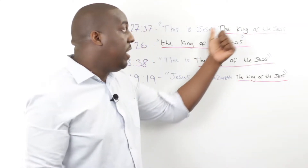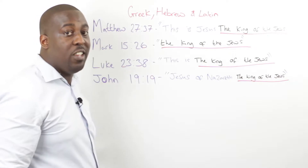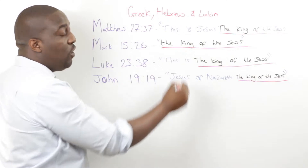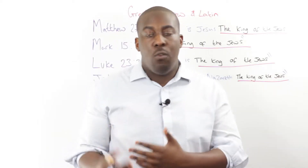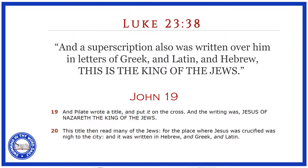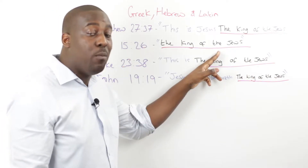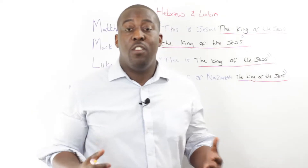We know that Pilate himself wrote these signs on the cross because it says so in one of the gospel accounts. And it says something really key in two of the gospel accounts: these things were written in Hebrew, Greek, and Latin. For any of you who are bilingual or multilingual, you can already see where I'm going. You can take one sentence in English and translate it into another language, and what might happen? You might take some words out or add some words in.